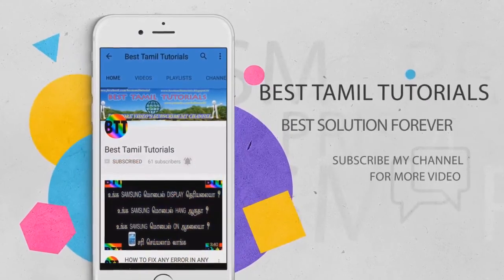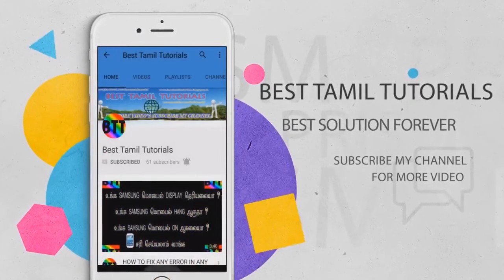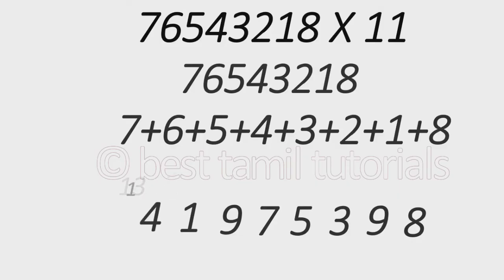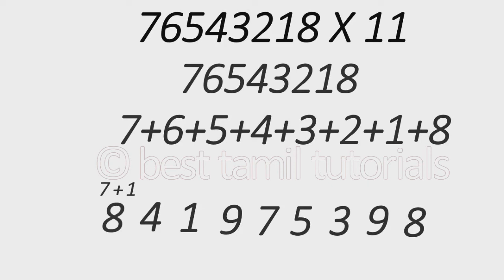If you follow the videos, subscribe to our channel. If you have a bell symbol, press it. Now, we select the number. The number is 7. We add the balance between the 7, and the answer is 18. This is the answer. You can get the answer in a single step. As long as there are numbers, you can use this method in a single step. This is the trick.